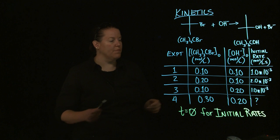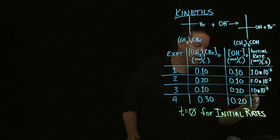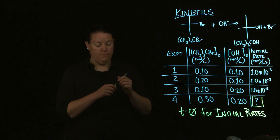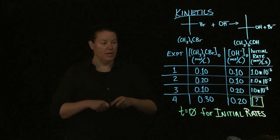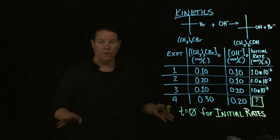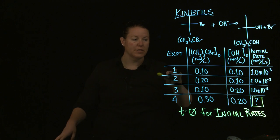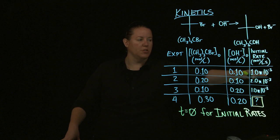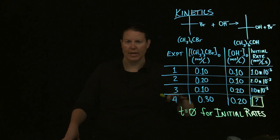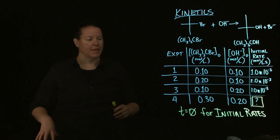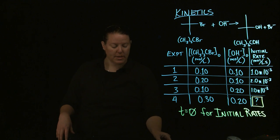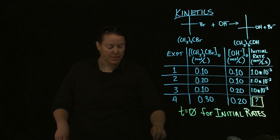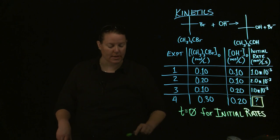So I'm taking the concentration of the reactants right at T equals zero, and then I'm getting the rate right as the reaction begins. What we're looking for is where the question mark is — what is the rate? What can I predict is the rate for the fourth experiment? You have to have multiple experiments to make this happen. Whenever you see a chart like this, you're going to be doing an initial rates kinetics calculation.